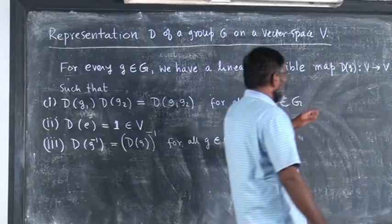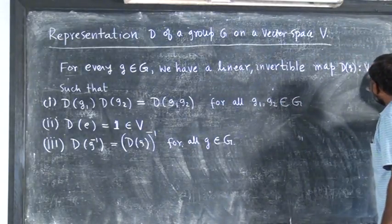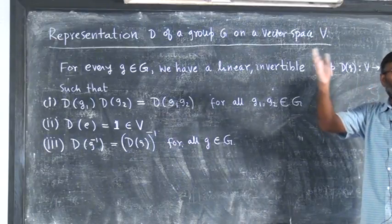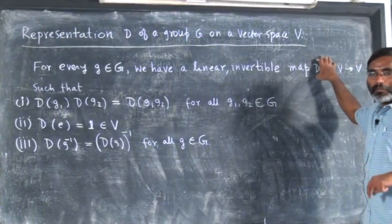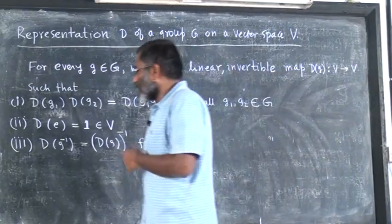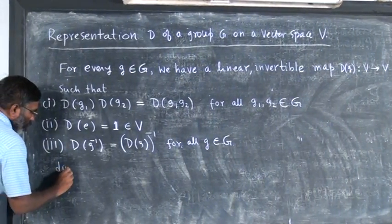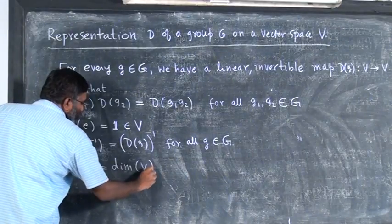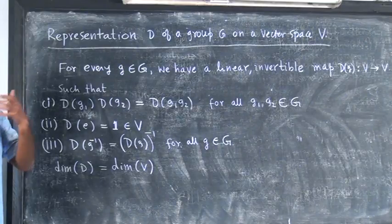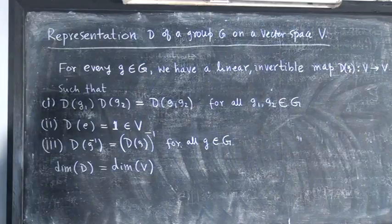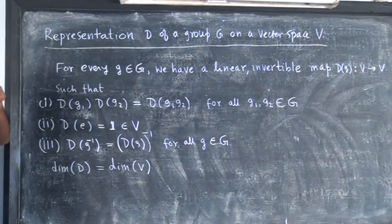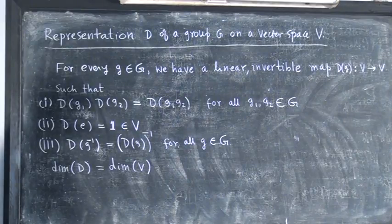Now, if V is an n-dimensional vector space, then D(G) is a linear transformation from an n-dimensional space to an n-dimensional space, so it will be a matrix of size n × n. We have the concept of the dimension of representation: the dimension of D is the same as the dimension of the vector space V. This is the definition of representation.